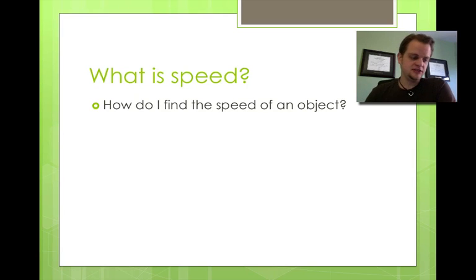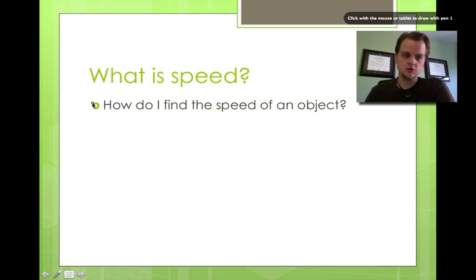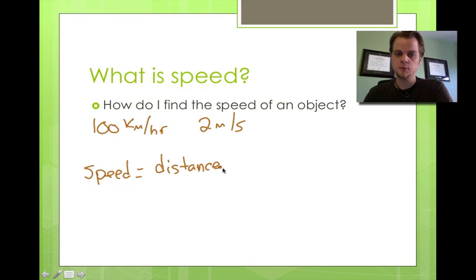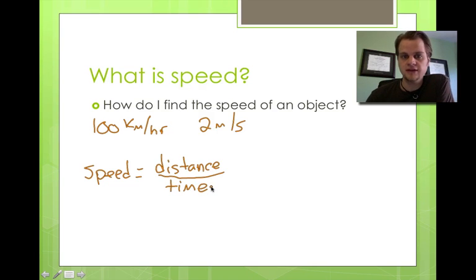So what is speed and how do I find the speed of an object? It's really quite simple. If we went back to the last one where we had 100 kilometers per hour or 2 meters per second, the units tell you everything you need to know. Kilometers is a unit for distance and hours is a unit for time, so really all we're doing is saying that speed equals the distance that something travels divided by the time that it took to do that.